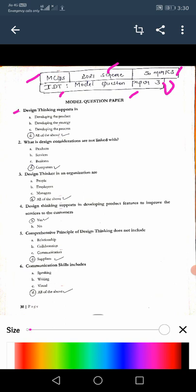Question number one: Design thinking supports in development of product, development of strategies, development of process, all the above. So it is all the above, question number D. For two: What is design consideration not linked with? Product, service, business. It is linked with all these three but not linked with computers.